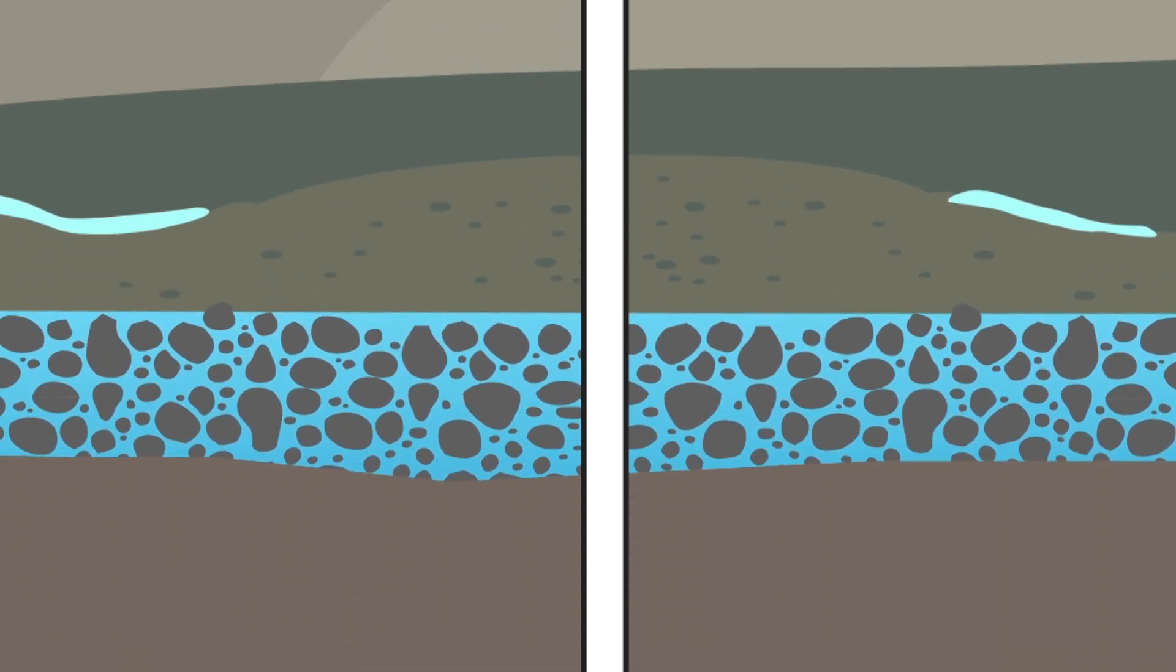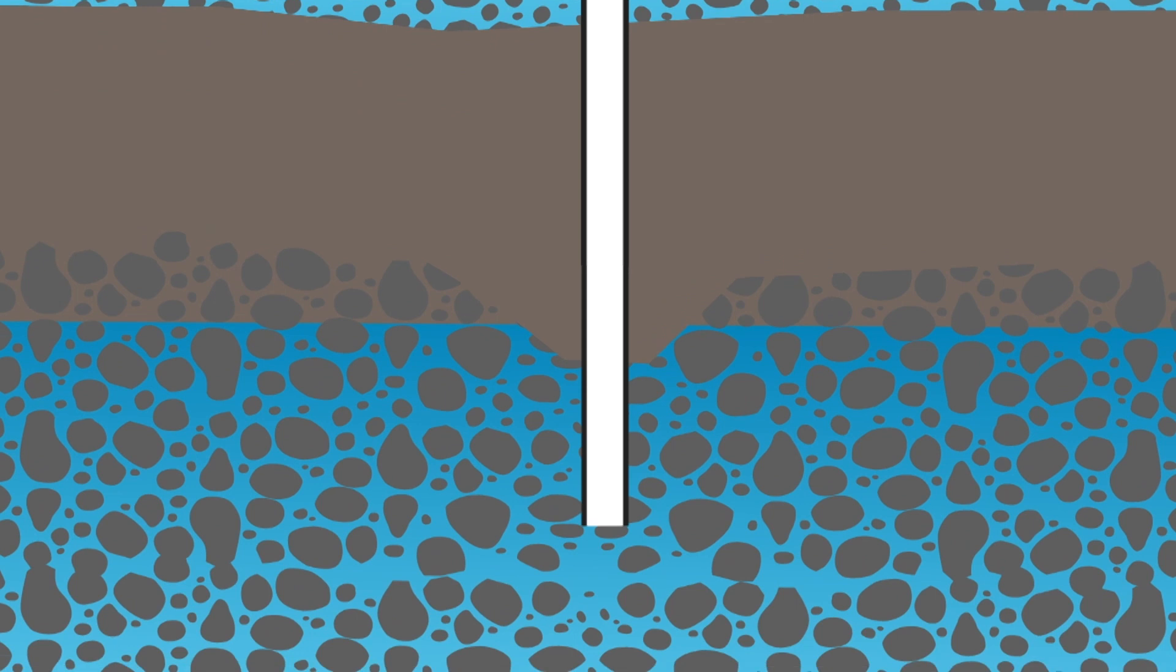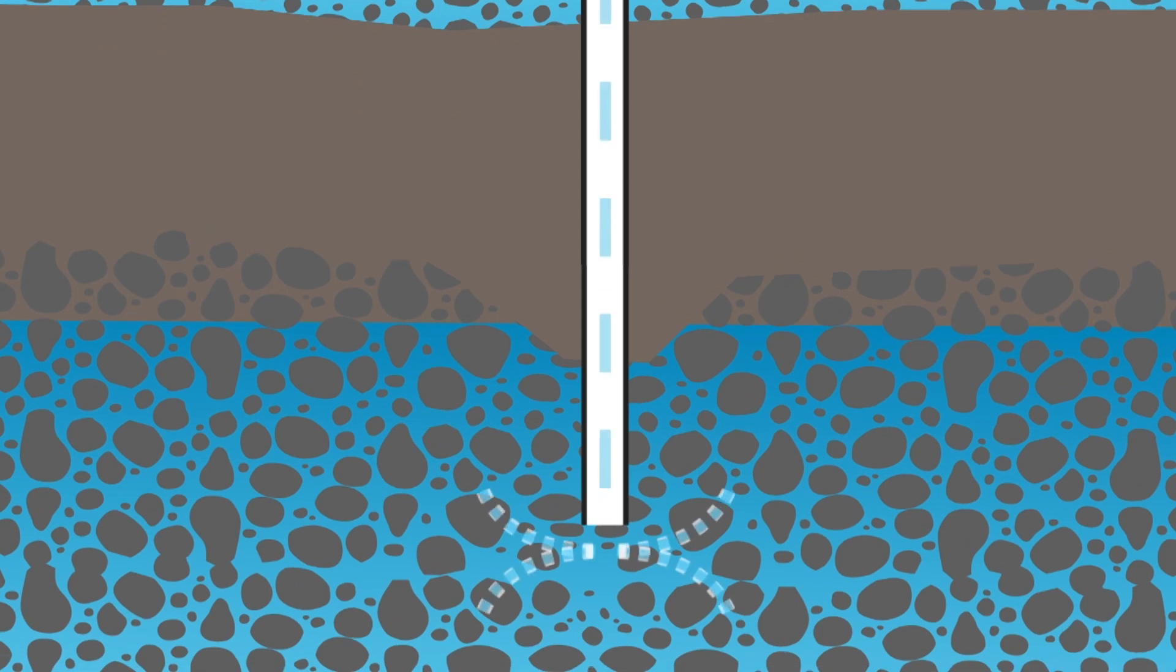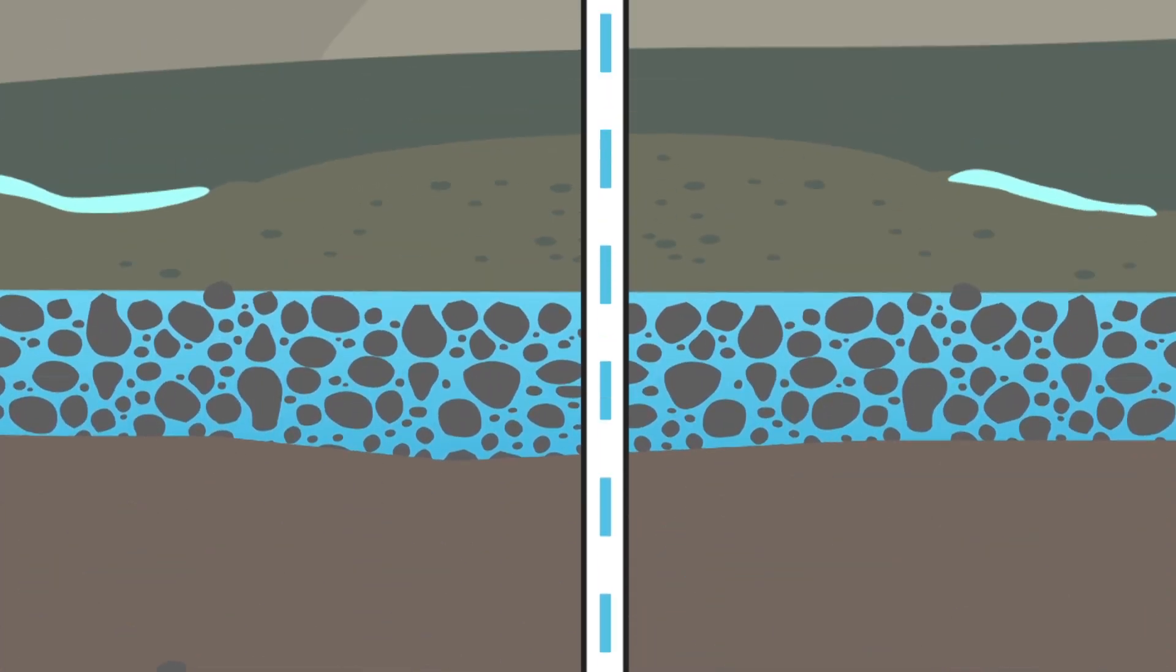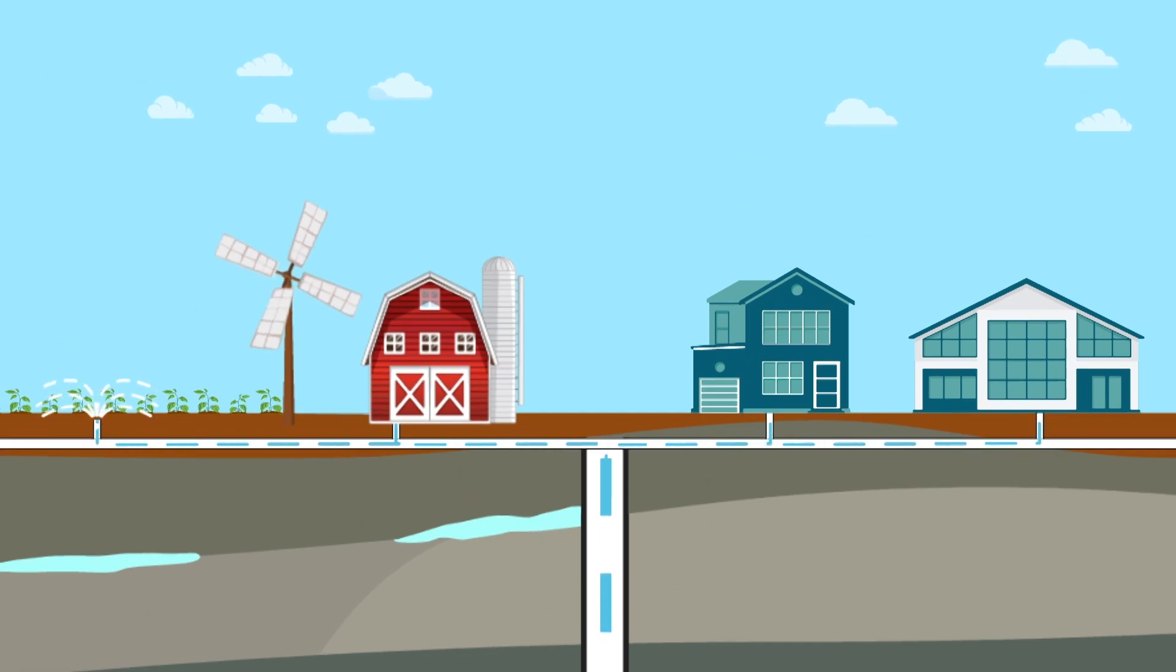How do we get groundwater? First, a well is drilled down beneath the earth's surface to where the water is located. Then the water is pumped up to the surface through a pipe and sent to where it's needed.